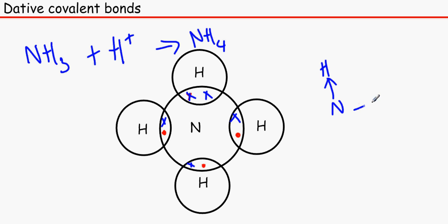Usually you would write it like this, where a line stands for covalent bonds which is being shared by both. And this arrow means that N donated its electrons to H. You need to remember the N.